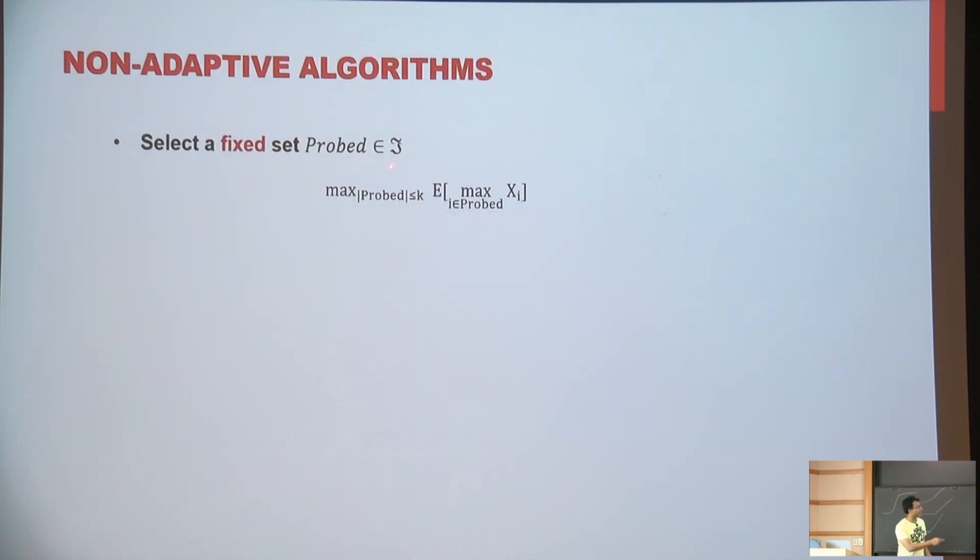And we'll focus on a special class of algorithms, which are the so-called non-adaptive algorithms, which are again natural. So it's an algorithm which fixes the set of buyers I'm going to visit upfront. So right in the beginning, I decide, these are the 10 buyers I'm going to go and visit, irrespective of how their values are behaving. So you go, here's the fixed set. And amongst them, you'll get the highest value.